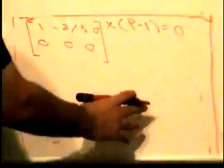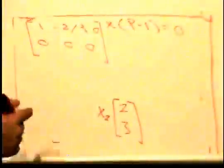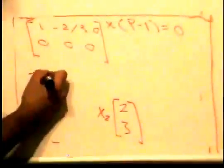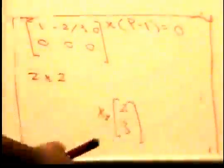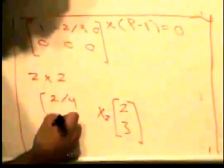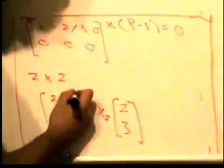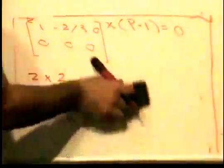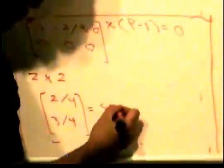Since we had a 2×2 matrix in the beginning, I'm going to divide each component by 4 because 2 plus 2 is 4. So you're going to get 2/4 and 3/4. Therefore, this is the steady state vector.